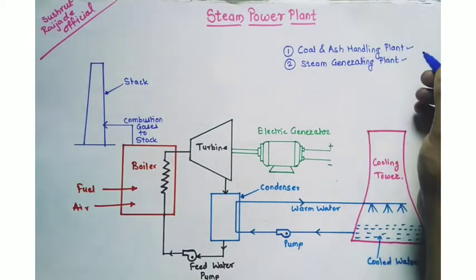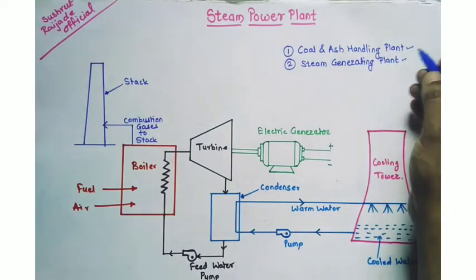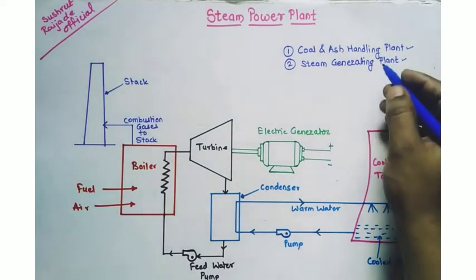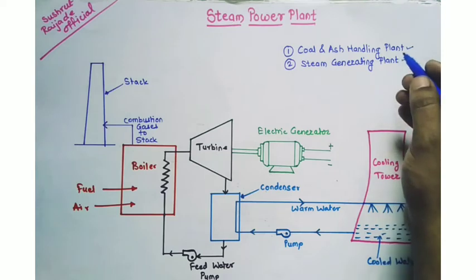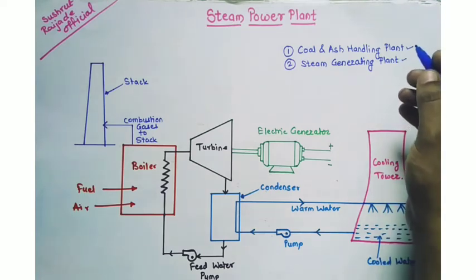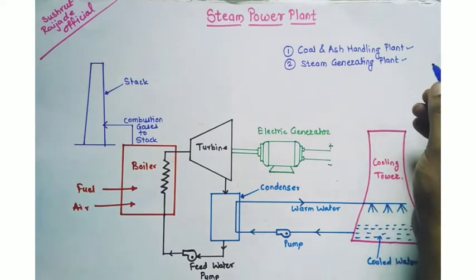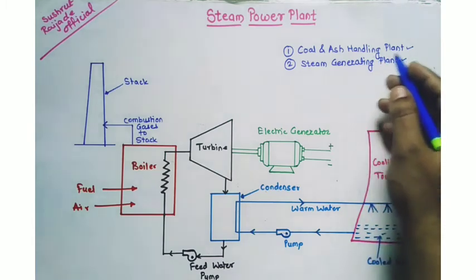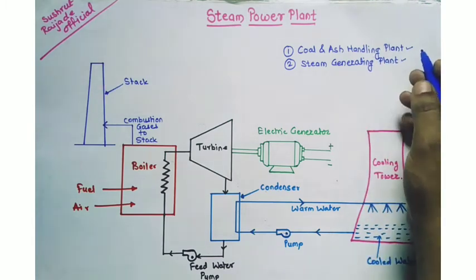That is the coal handling plant. Ash handling plants are used to handle the ash which is generated due to the combustion of coal.